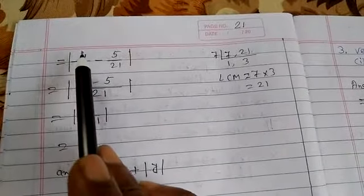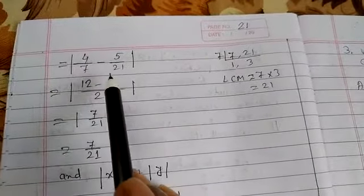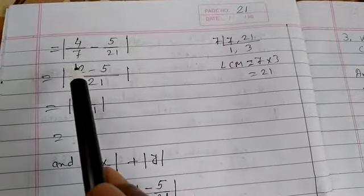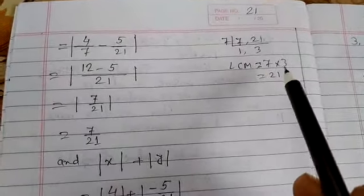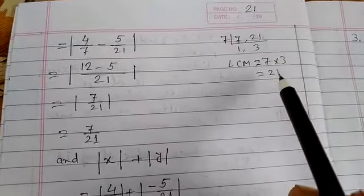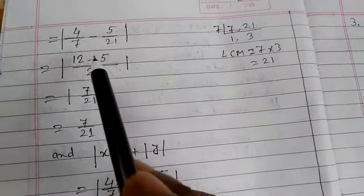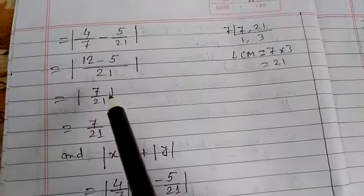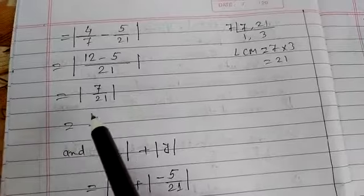Equals 4/7 minus 5/21. Here we do LCM of 7 and 21, we get LCM 21. Equal to 12 minus 5 by 21, equal to 7/21.